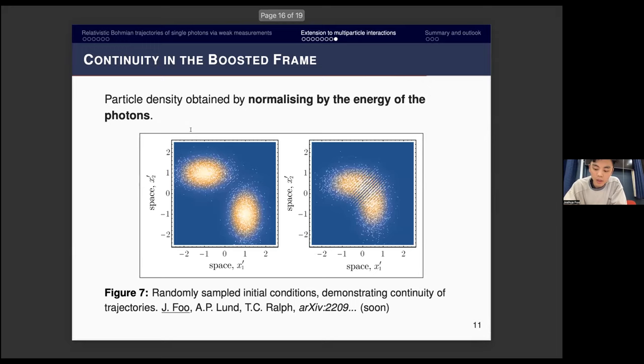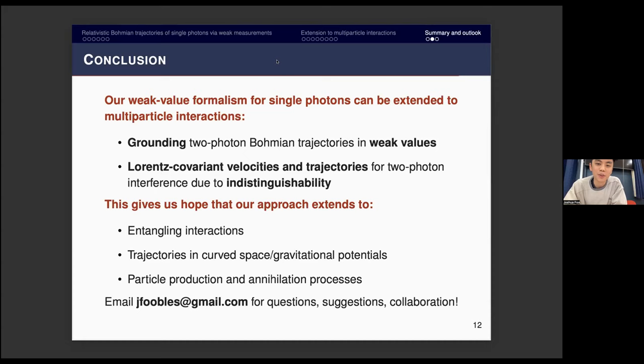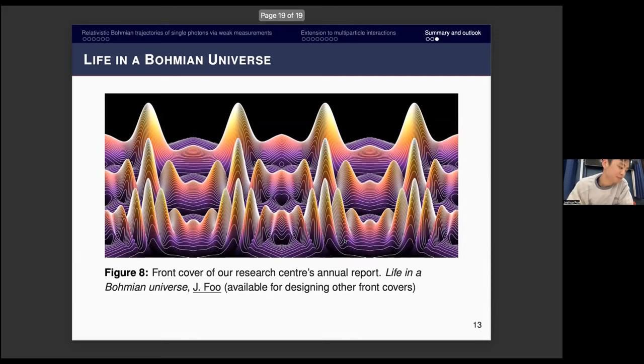To summarize, our weak value formalism for single photons can be extended to multiparticle interactions. We've done this by grounding two photon Bohmian trajectories in the notion of weak values of momentum and energy. We studied the velocities and trajectories for a two photon interference due to their indistinguishability. This gives us hope that our approach can extend to entangling interactions, trajectories in curved space, gravitational potentials and particle production and annihilation processes. Thank you for your attentiveness, and feel free to email me for any questions or suggestions or collaboration. This is a photo I made for our center workshop annual report.